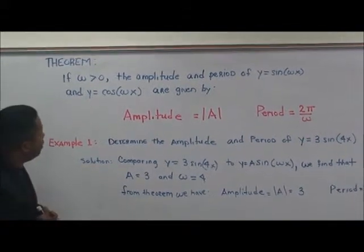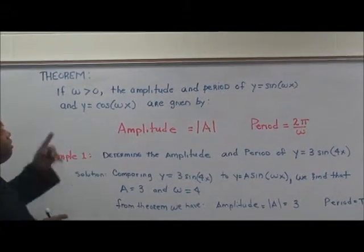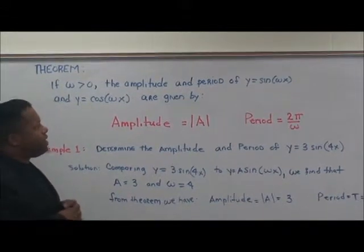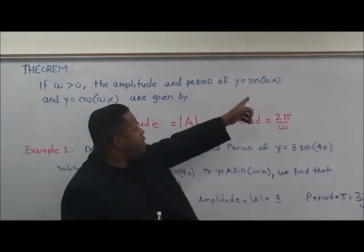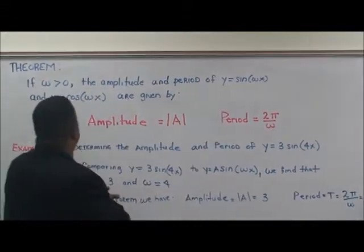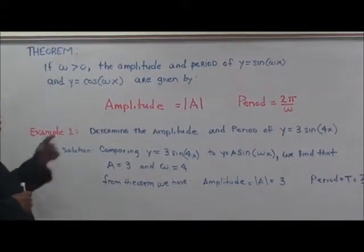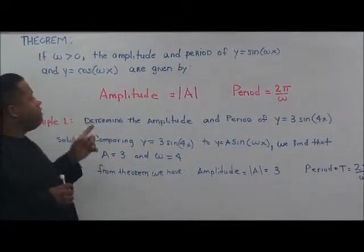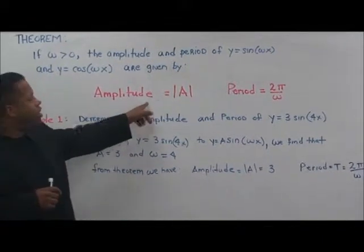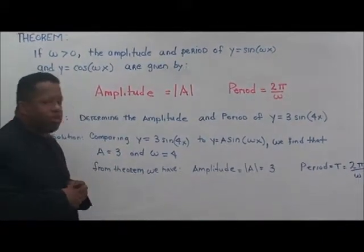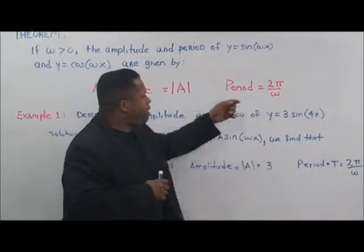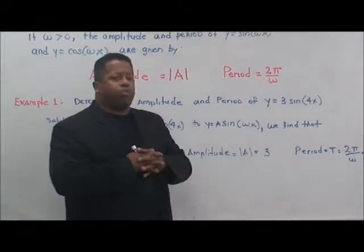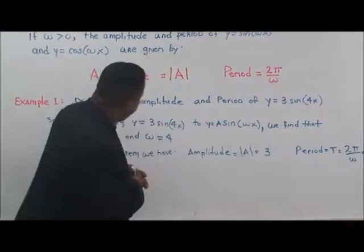If omega is greater than zero, the amplitude and period of y equals sine of omega times x, and y equals cosine of omega times x, is given by: the amplitude is equal to the absolute value of A, and the period is equal to 2 pi over omega.